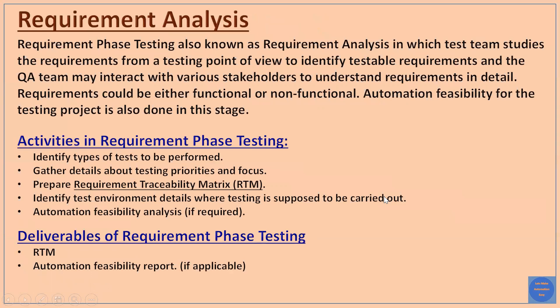The first phase is requirement analysis. In this phase, the test team tries to identify the testable requirements from a testing point of view. The QA team interacts with various stakeholders to understand the actual requirements and capture their details. Requirements could be functional or non-functional. In this phase, the test team also checks automation feasibility for the testing project.